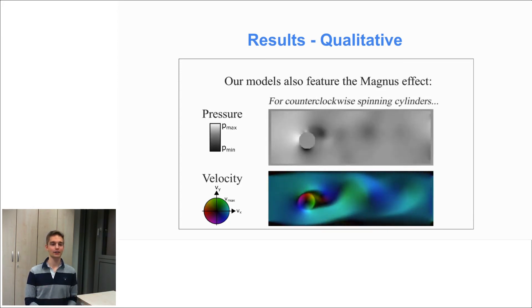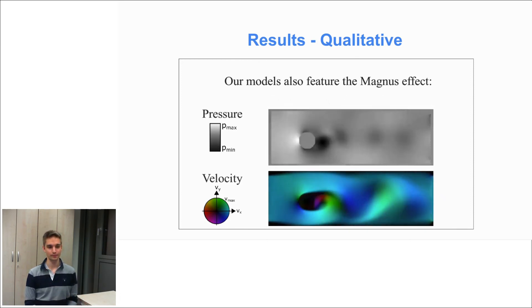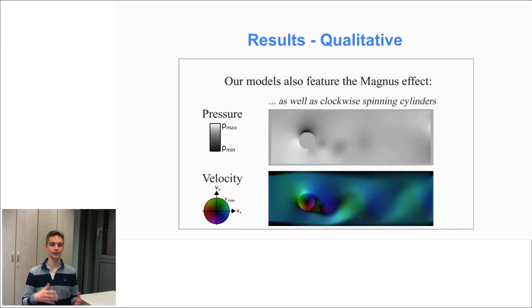Our models also feature the Magnus effect. So the Magnus effect always appears if we have a spinning object in a flow field. And it has a characteristic low pressure field on one side of the object. It's commonly used in sports like soccer or tennis where we want to deflect the path of a ball by spinning it.